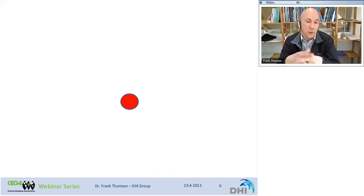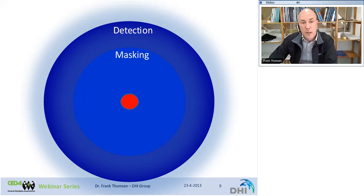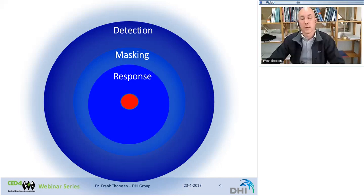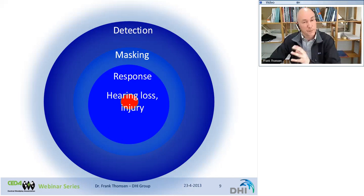Man-made sound can interfere with these functions. If we have a sound source, sound can be detected by marine life over very large distances. Closer to the source, sound can mask communication signals or echolocation signals of biological importance. Even closer, sound can lead to behavioral reactions — from very subtle movements to outright avoidance of an ensonified area. Very close to the sound source, sound can lead to hearing loss, either temporarily or permanently, or injury. At very high received levels, sound can actually kill the receiver.